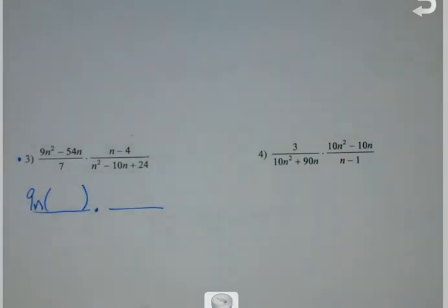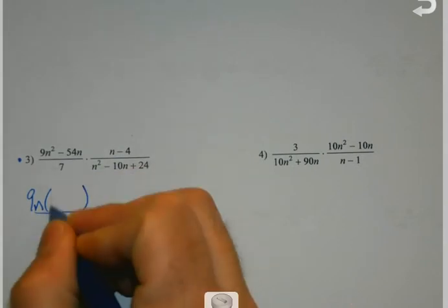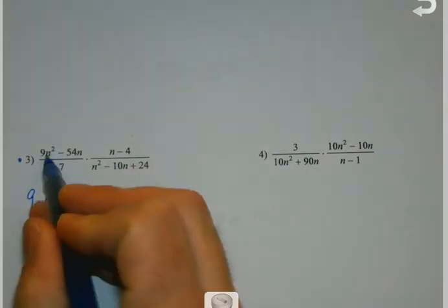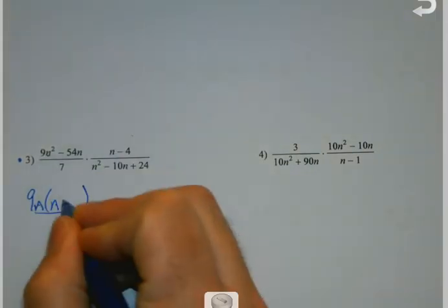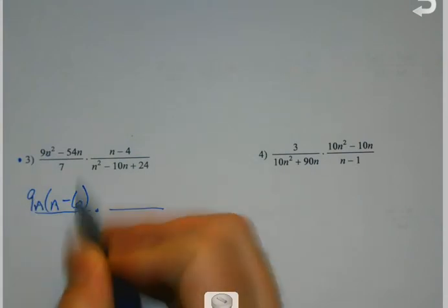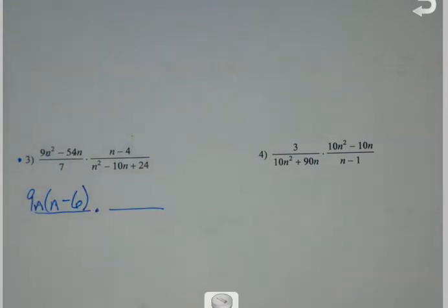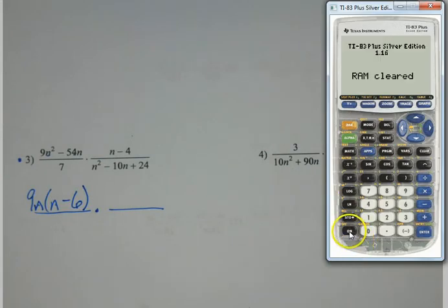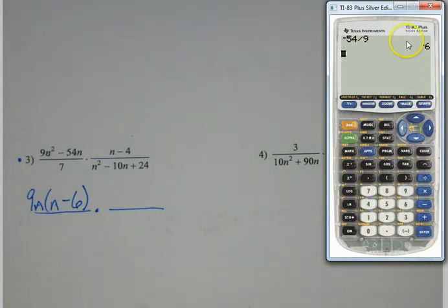Once that gets done, now what do I have to multiply that by to get each of the terms inside back? n minus 6. n, because n times n is n squared. n minus 6, because 9 times negative 6 is negative 54. If multiplying isn't your strength, you can work this backwards. You could say that's negative 54 and I have a 9 out there — oh, it's negative 6. Do that if you need to.